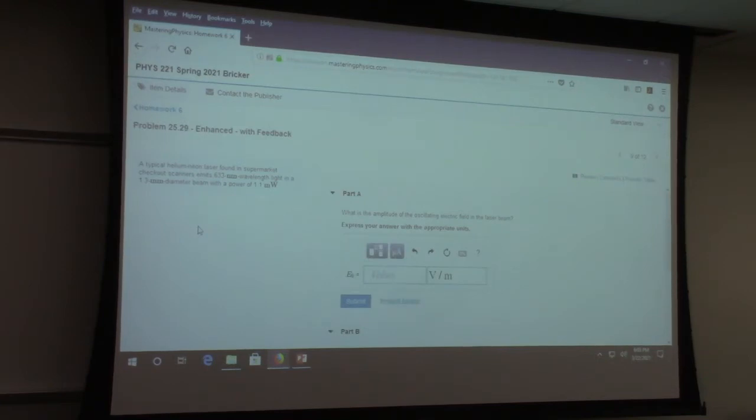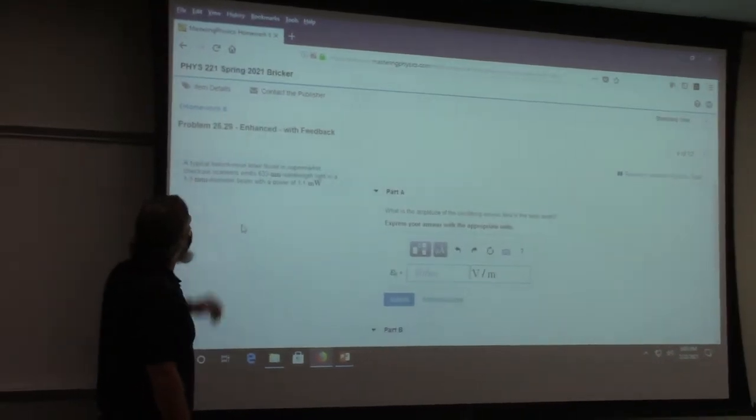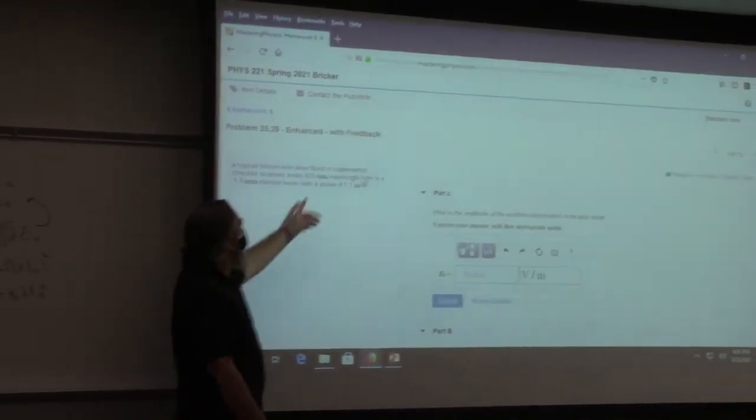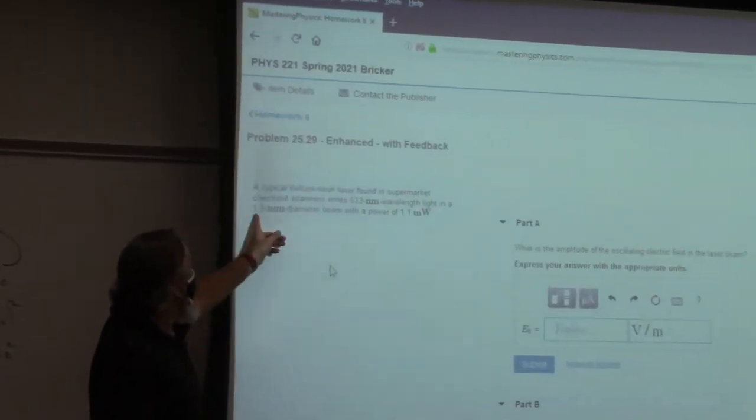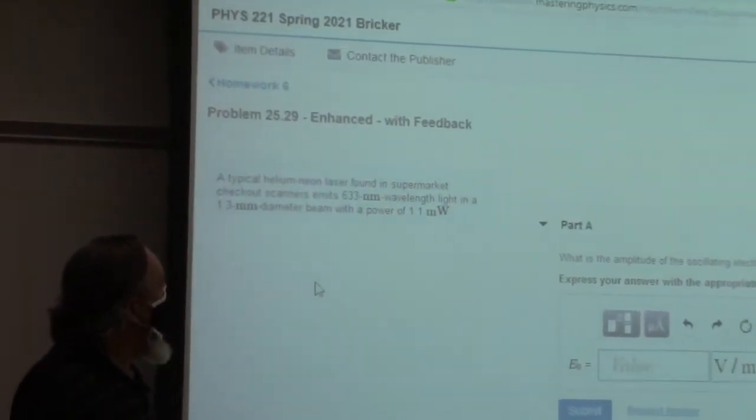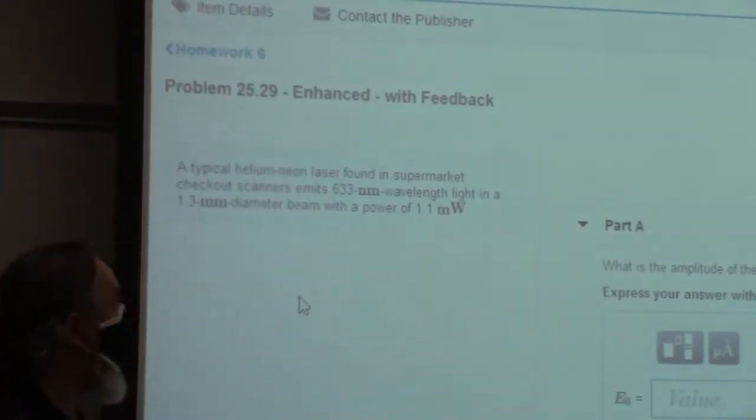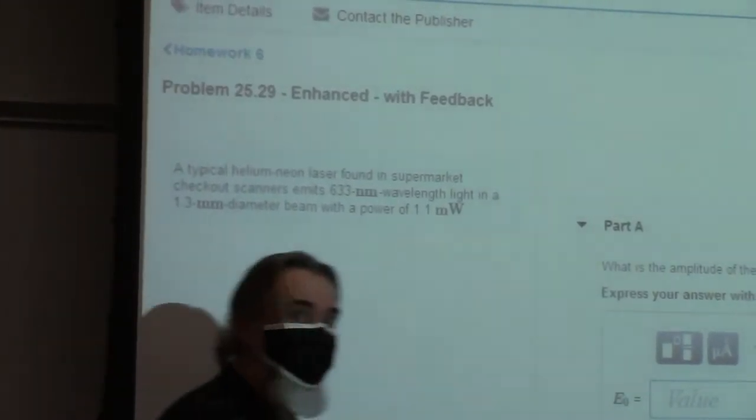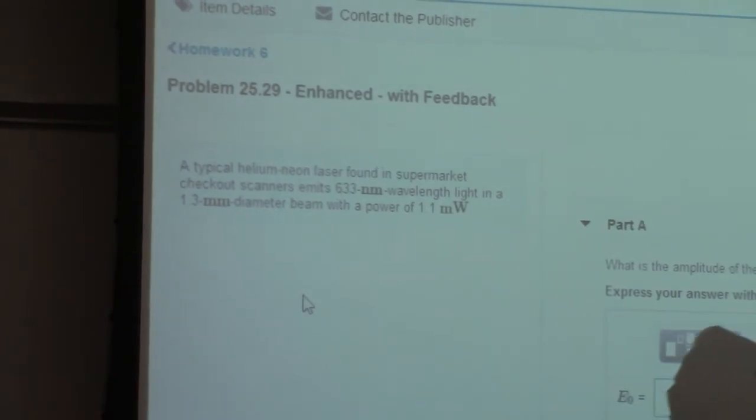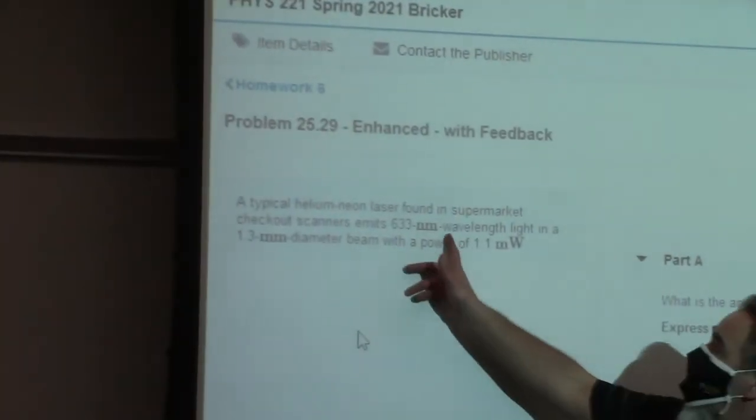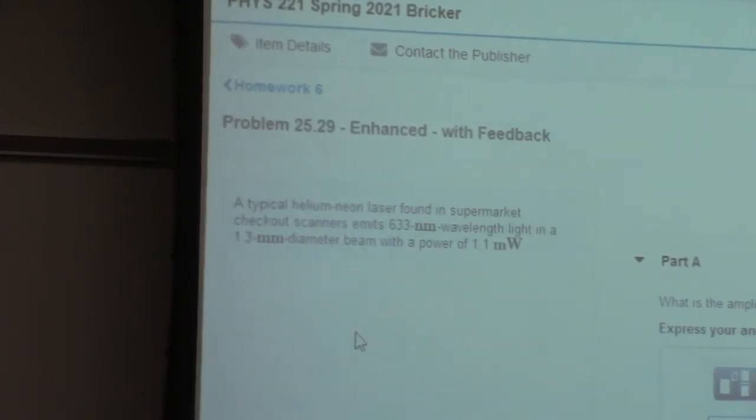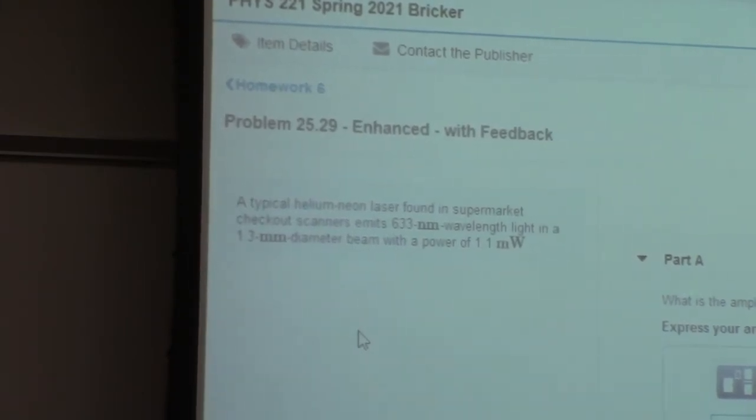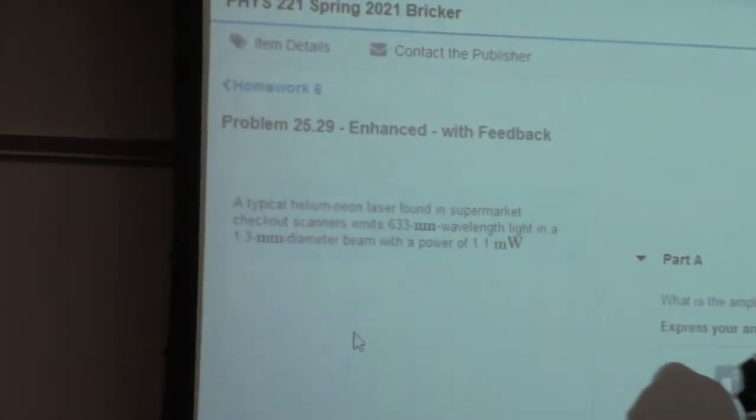Okay, a typical helium neon laser found in the supermarket checkout scanners emits 633 nanometer wavelength light in a 1.3 millimeter diameter beam with the power of 1.1 milliwatts. Okay, so it's a lot of information to take in. Some of it is just descriptive. The 633 nanometers, that's the wavelength. We haven't really done anything with wavelengths other than to say the speed of light is equal to the frequency times the wavelength.